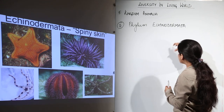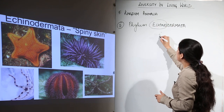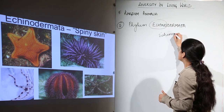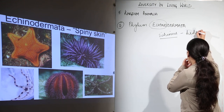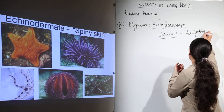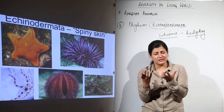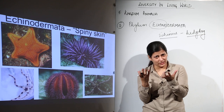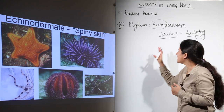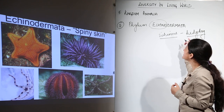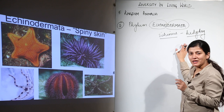This name itself has meaning inside it. 'Echino' is derived from the Greek word 'Echinus,' which means hedgehog. Hedgehog is a rodent-like thing that has many spines over its body. So the hedgehog-like spiny appearance over the skin is what gives this phylum the name Echinodermata.